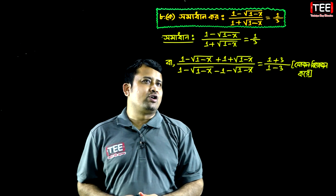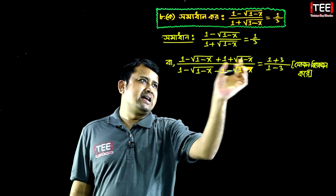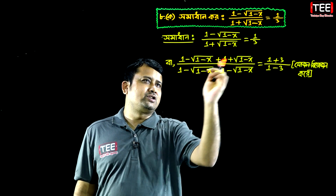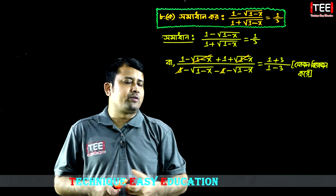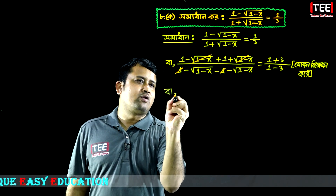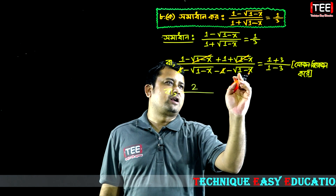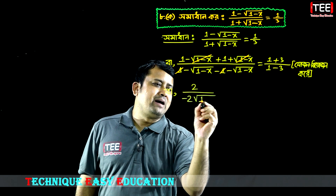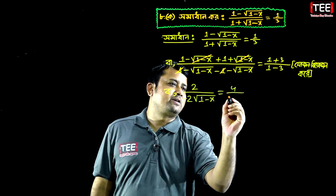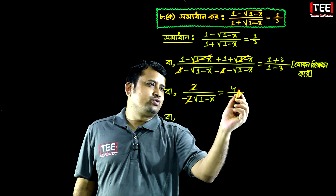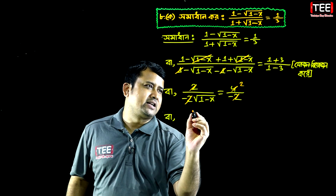এবার আমরা যদি calculation করি, root এর ভেতর 1 minus x — এর আগে যদি নাসে plus হলে এটা আর এটা কাটা যায়, 1 আর এটা কাটা যায়। তারপর রয়ে যায়: বার যোগ বললে কী পাই? দেখো, 1 আর যোগ করলে 2 হয়, ভাগ minus root ভার 1 minus x। তাহলে লেখে 1 minus 2 root ভার 1 minus x, x, x, x-class x, x minus x, 1।